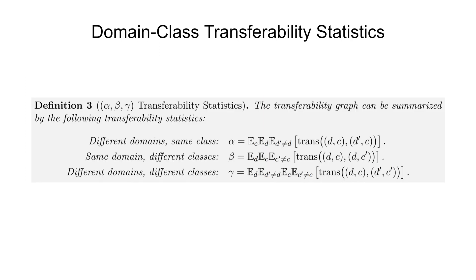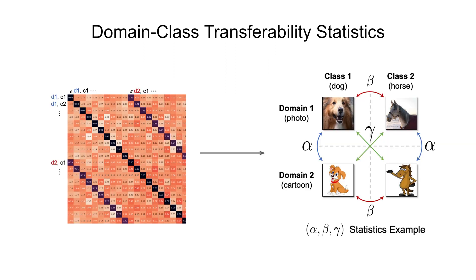We can further compress the transferability graph into only three statistics: the transferability of different domains for the same class, same domain but different classes, and different domains and different classes. Visually, the transferability statistics look like this.